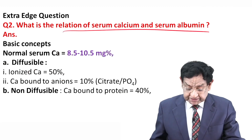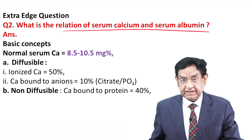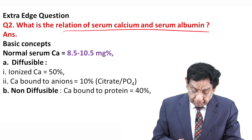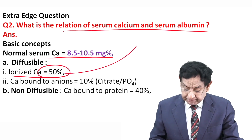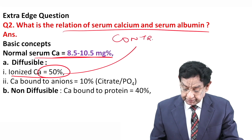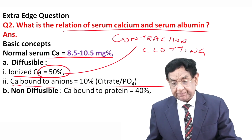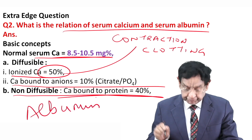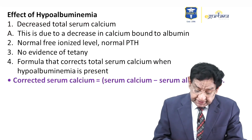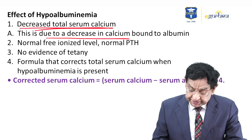What is the relation of serum calcium and serum albumin? When taking a sample for calcium, we must also check serum albumin. Normal serum calcium level is 8.5 to 10.5 mg%. Ionized calcium is 50% of total, and it is this fraction that is metabolically active — especially in muscle contraction and clotting. Calcium bound to anions (citrate and phosphate) is 10%. Non-diffusable calcium is bound to protein, mainly albumin, which accounts for about 40% of total calcium.